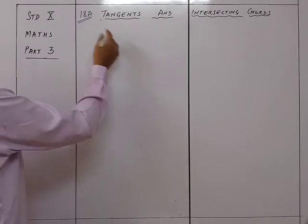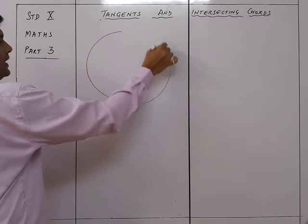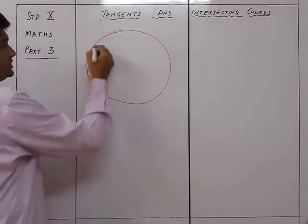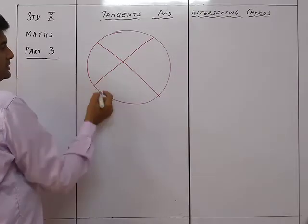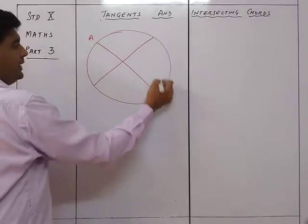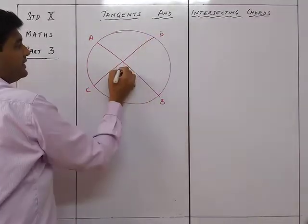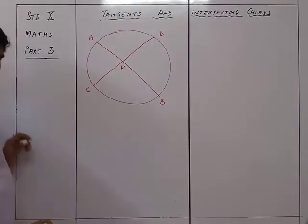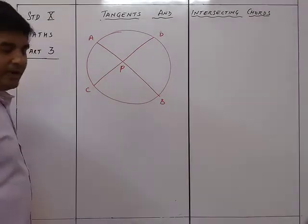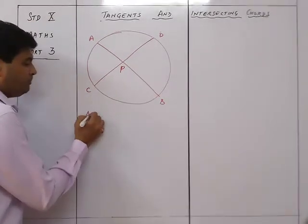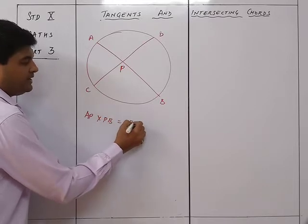The first theorem is about a circle with two intersecting chords: chord AB and chord CD intersecting at point P. What we prove is that PA × PB = PC × PD — the product of the segments of one chord equals the product of the segments of the other chord.